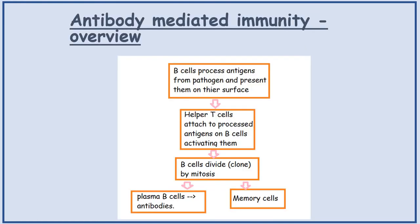Now looking at antibody-mediated immunity. B-cells process their antigens from the pathogen and present them on their surface. So this time it's the B-cells rather than the phagocyte that's presenting the antigens on their surface. Then helper T-cells attach to the processed antigens on the B-cells, which activates them.